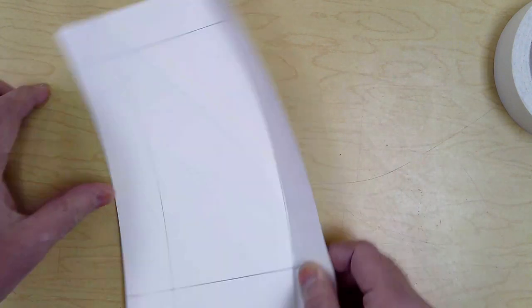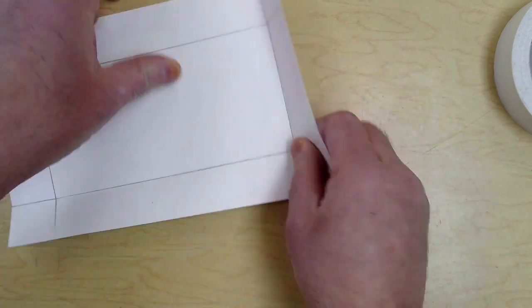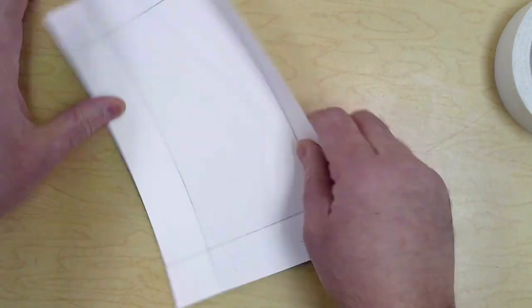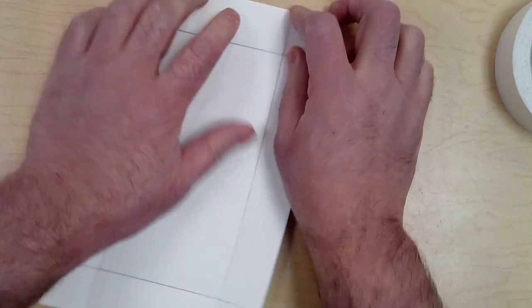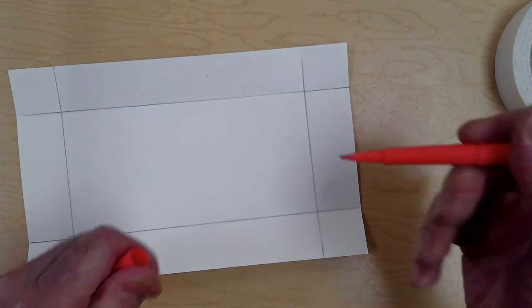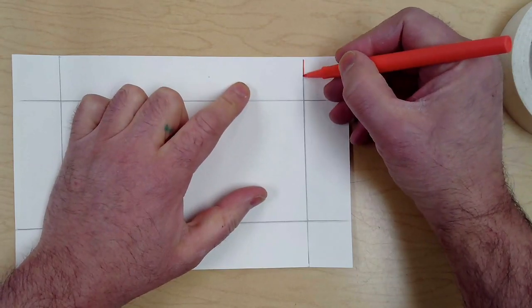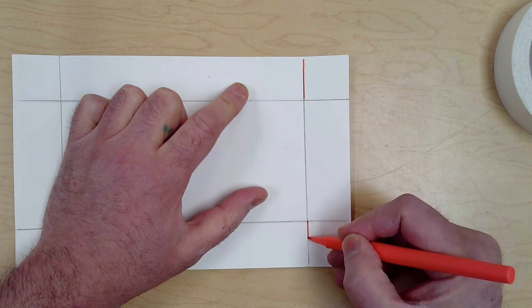Fold up on those score marks. Make four cuts here and here.